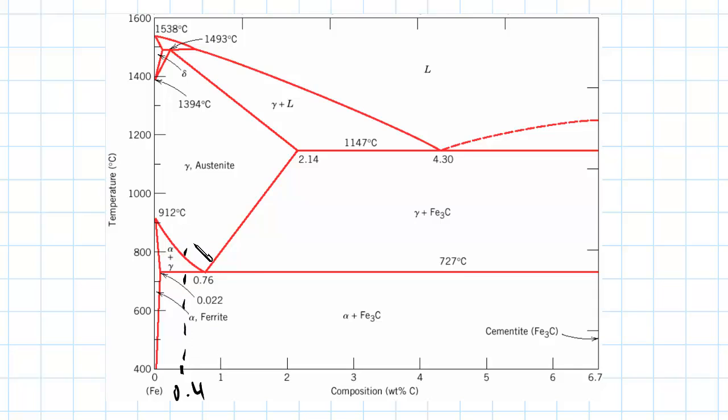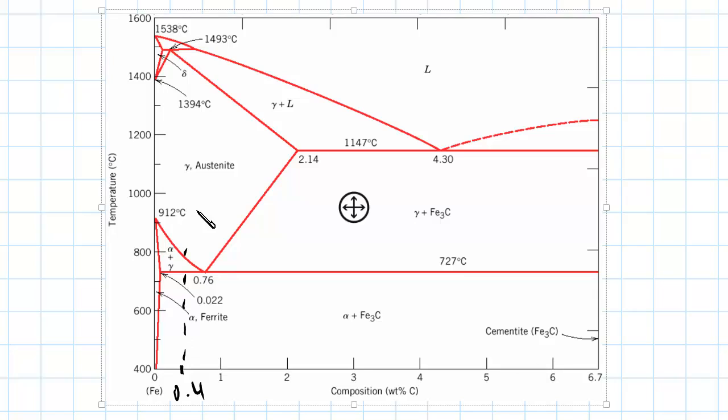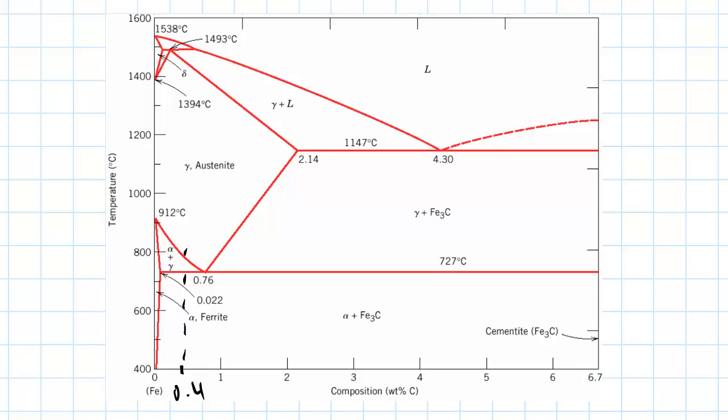So we're at a hypo-eutectoid reaction since we're at the left of the eutectoid point. And since we're going to be cooling to 682 degrees Celsius, well we're below 727 degrees Celsius, which means that we're going to be entering into this region.